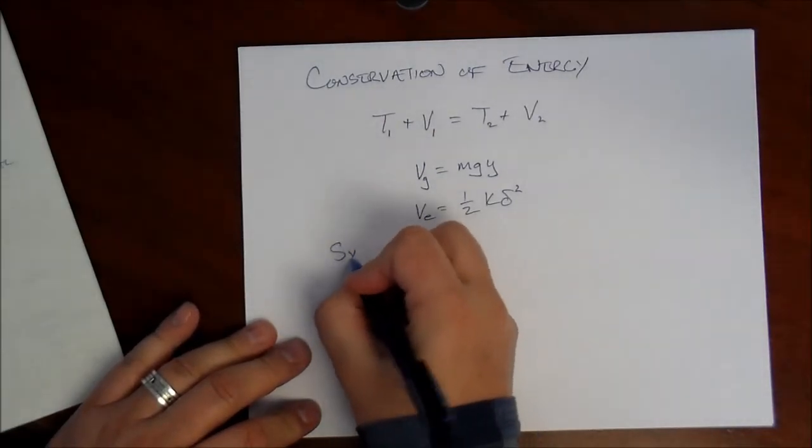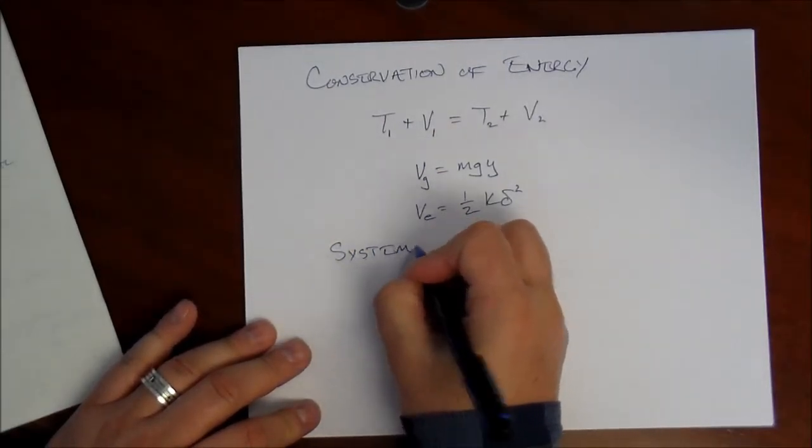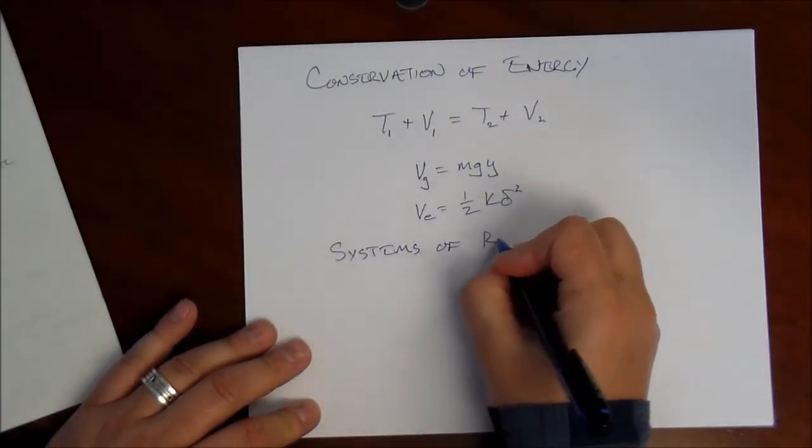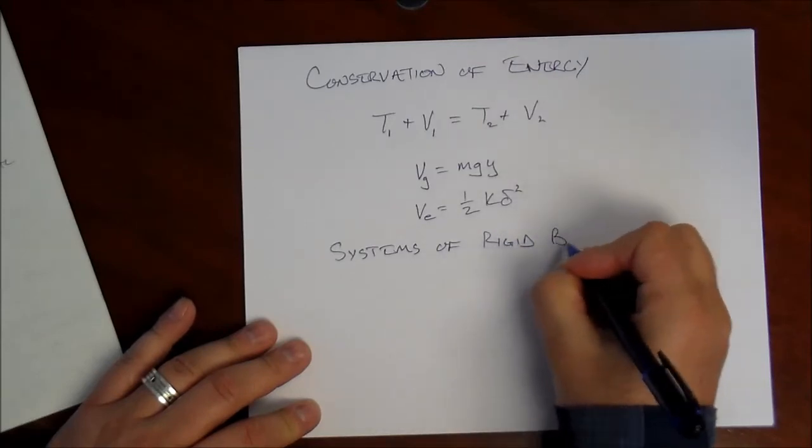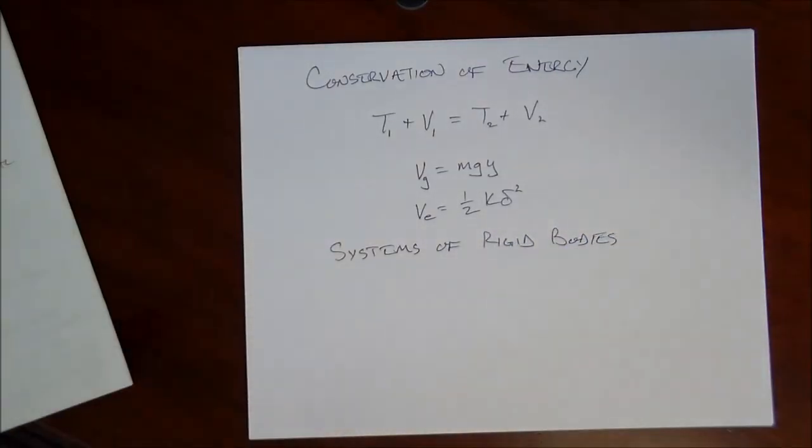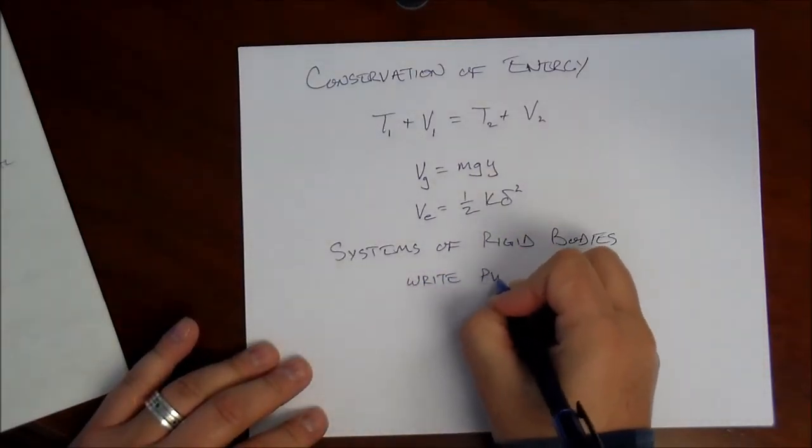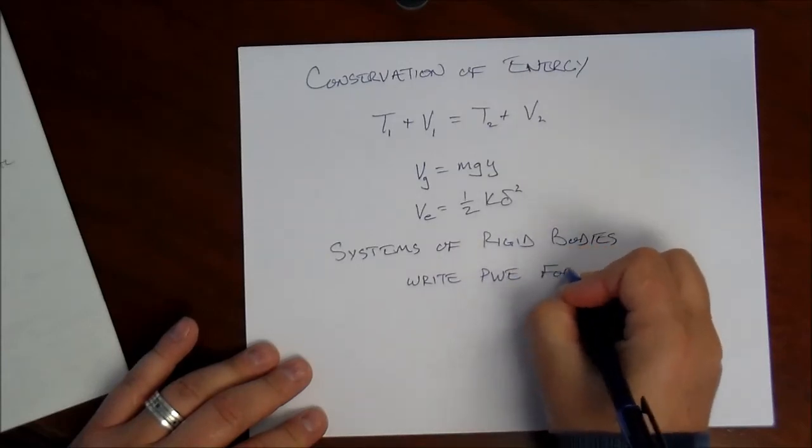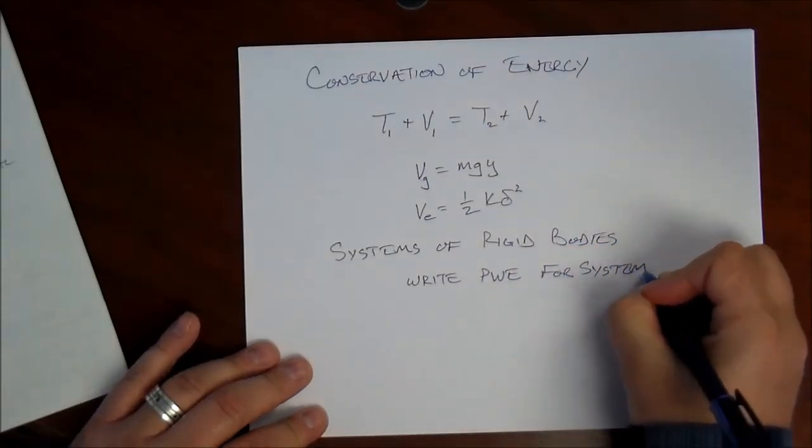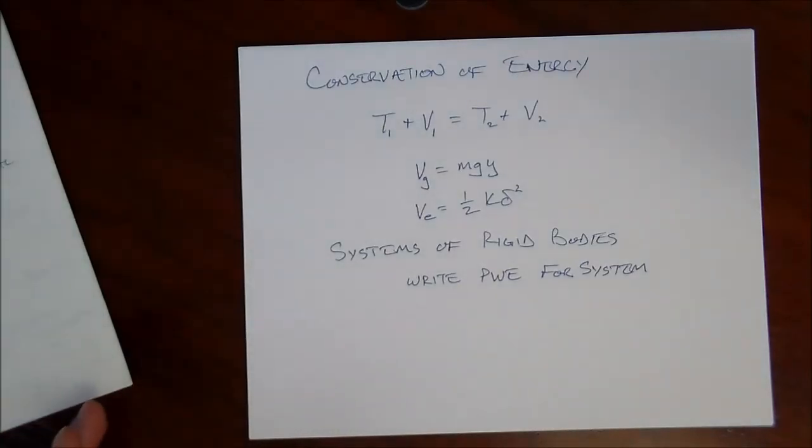And one last concept. If you have more than one rigid body interacting in a system, just like we did for particles, you can write the principle of work and energy for a system. That is the kinetic energy of all rigid bodies in the system, the work done on all rigid bodies of the system.